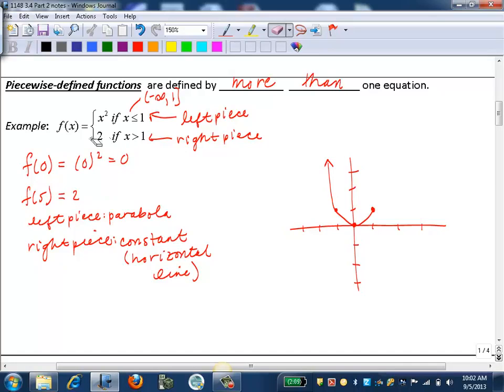Then at 1, it splits, and now it's going to jump up to a constant function, which is a horizontal line where the y value is 2. So I'll go up where my y value is 2. And now I'm going to put an open circle there because there's no equal sign on this inequality here. So that means it's just past 1 where this piece starts. So then I'm just going to continue my horizontal line infinitely to the right, use my arrow to indicate infinitely.